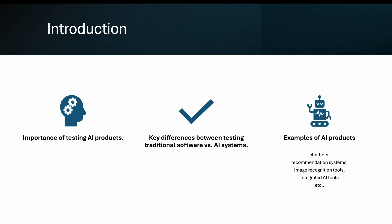Examples of AI products in 2025 include chatbots, recommendation systems, image recognition tools, AI tool integrations, automated driverless cars, and drones. If you are aware of others, feel free to comment. Also, if you've started testing AI somewhere, share your insight — what you are testing and how you are testing — that would be great.